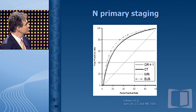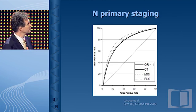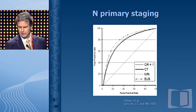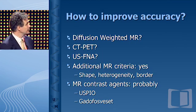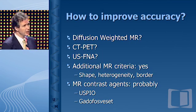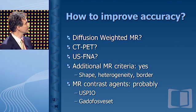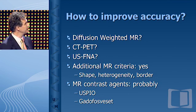If you use size only, you come up with an ROC curve that is reasonably accurate but not terribly accurate. Can we do better? We've tried diffusion MRI — that doesn't really help. CT-PET only shows the big nodes. Ultrasound with fine needle is cumbersome. If you use additional MR criteria — not just size, but also shape, heterogeneity, and border — it gets better. MR contrast agents are still being studied. They work, but they're not ready for clinical practice yet.